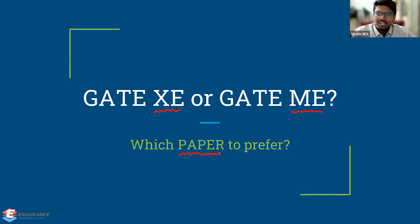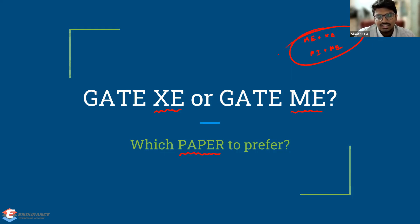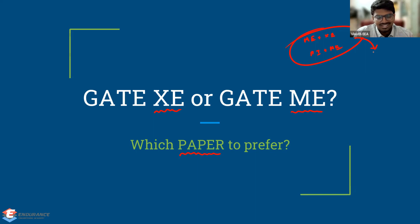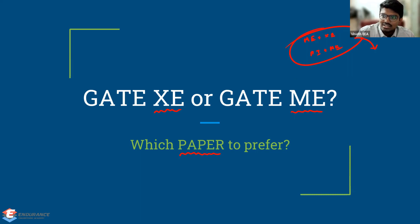You might also have a doubt whether to go for ME plus XC or PI plus ME — that is, whether to prefer Production plus Mechanical Engineering or Engineering Science plus Mechanical Engineering. I made a detailed video about choosing the second paper last year for GATE 2022, so I'm adding that video to the description. Go through it to clearly understand whether you need to prefer ME plus XC or ME plus PI.